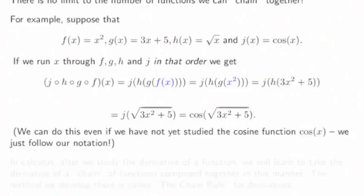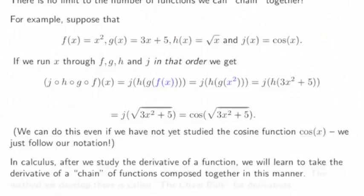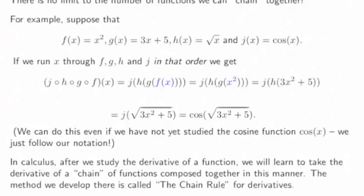Again, we can do this even if we have not yet studied the cosine function — we just follow our notation. In calculus, after we study the derivative of a function, we will learn to take the derivative of a chain of functions composed together in this manner. The method developed there is called the chain rule for derivatives.